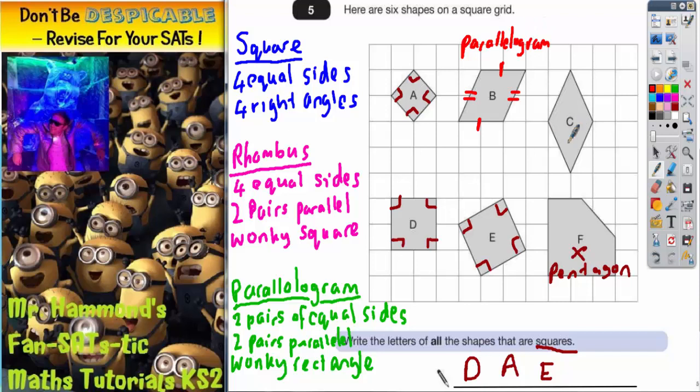What about shape C? Well, shape C, if you measure the sides with a ruler, you will notice that they are indeed equal. So there are four equal sides. So that's something that shape C has got in common with the square. It's got four equal sides.